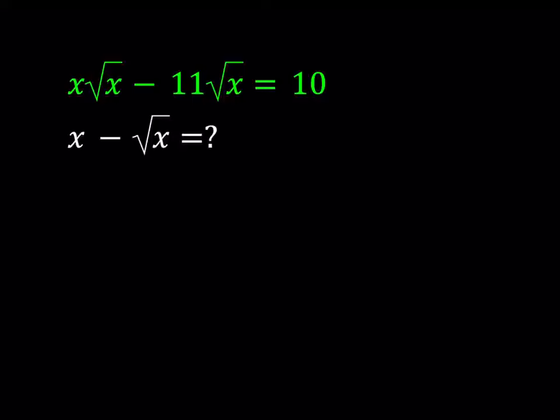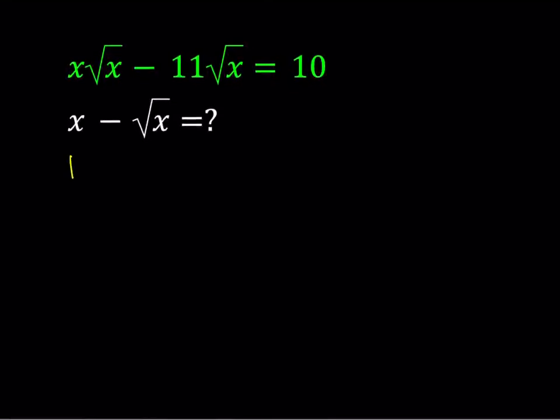I'll be presenting two methods. Let's start with the first method. Since we were given an expression, why don't we go ahead and solve for x and then substitute into the second one. So to make the solution a little easier, I want to factor out √x on the left hand side.